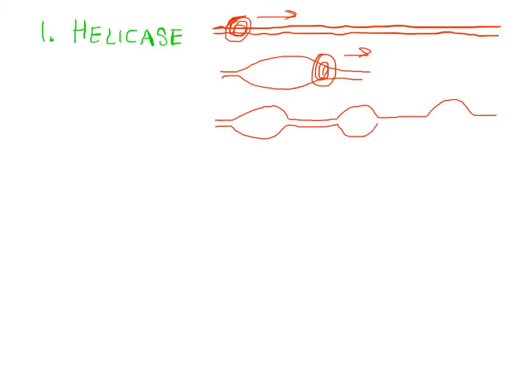We would find that there are multiple helicase molecules—one located there going in this direction, one located there going in that direction, one located there going in that direction. You would really have thousands of helicase molecules per chromosome.